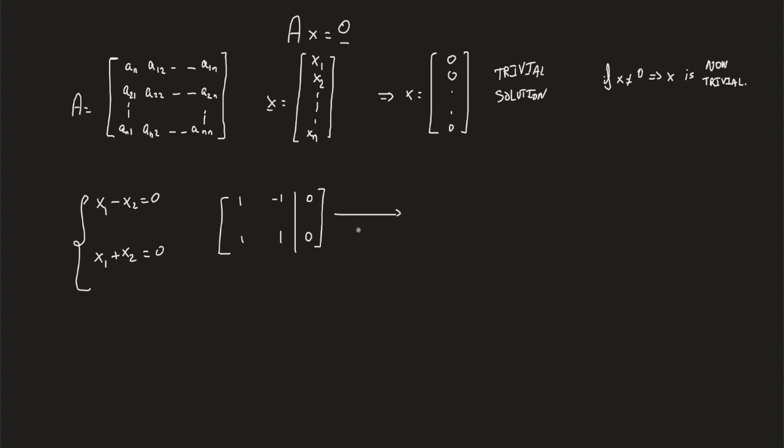Perform a row operation as r2 is r2 minus r1. The first row remains intact. The second row becomes 1 minus 1 is 0, 1 minus -1 is 2, and 0 minus 0 is 0. From the second row, 2x2 equals 0, which gives x2 equals 0. Also, from the first row, x1 equals x2, which is 0.